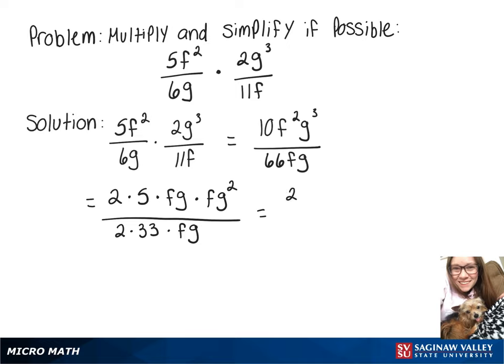So now we have 2 over 2 times 5 over 33 times fg over fg times fg².